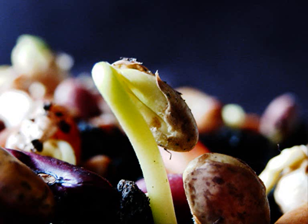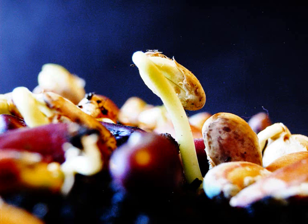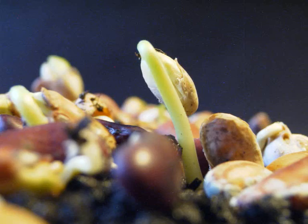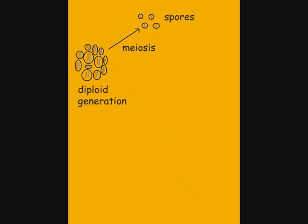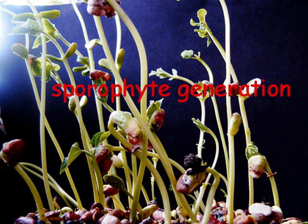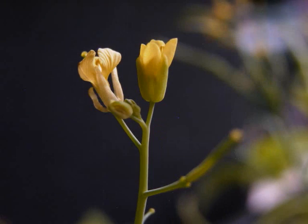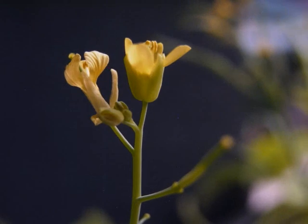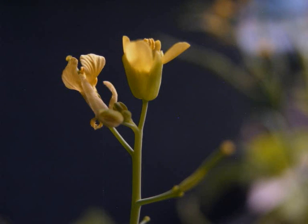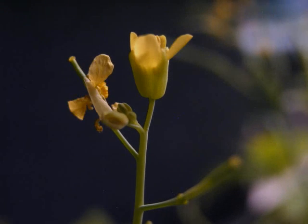When the embryo breaks out of the seed coat, germination has occurred and the new plant divides by mitosis in order to grow. Each diploid cell in the plant has the genes to make spores, and we call this generation of cells the sporophyte, which means spore-producing plant. When flowers are produced, the plant will undergo the alternation of generations, and genetic diversification occurs once again.